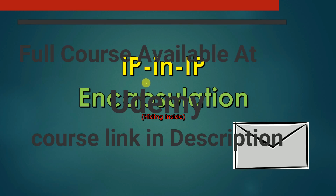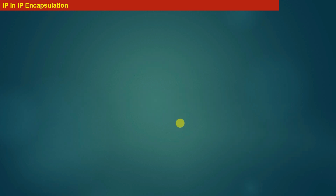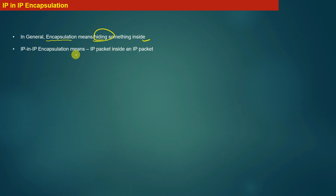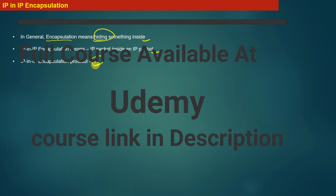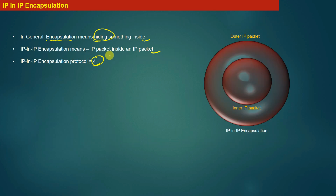In this module we will discuss IP in IP encapsulation, which literally means hiding inside. Encapsulation means hiding something inside — IP in IP encapsulation means an IP packet is hidden inside another IP packet. When IP in IP encapsulation happens, the protocol value in the IP header is 4. This value of 4 is the identifier that IP in IP encapsulation is occurring.